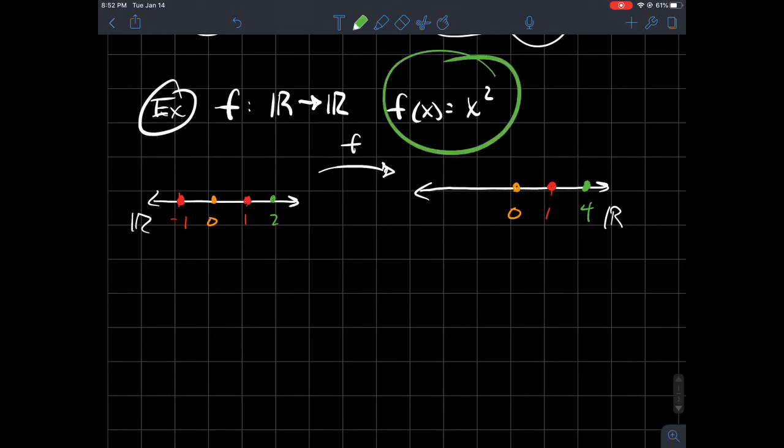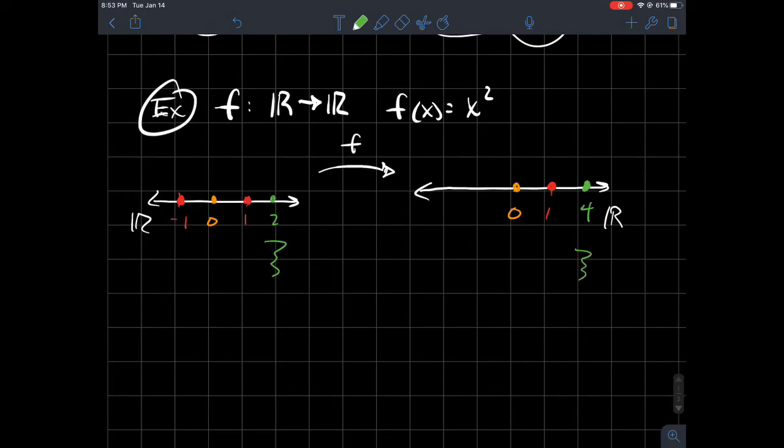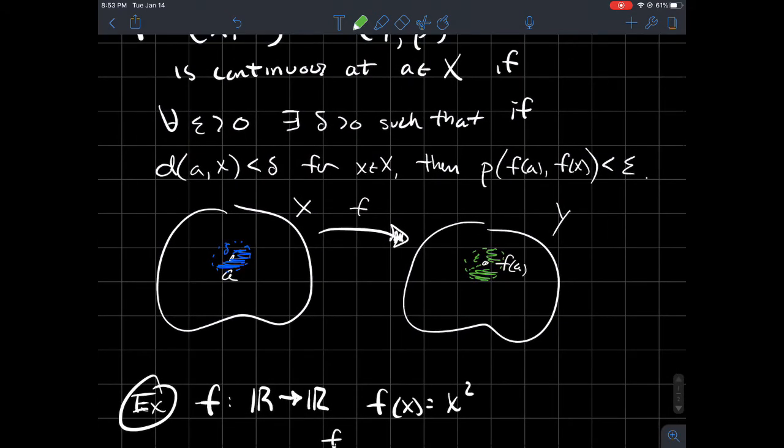This function here we know from calculus that this function is continuous, and I want to explain that to you in this way too. Let's try to show that this function is continuous at the point two, so our a here is two. We care about two and we're going to think about two's output four.